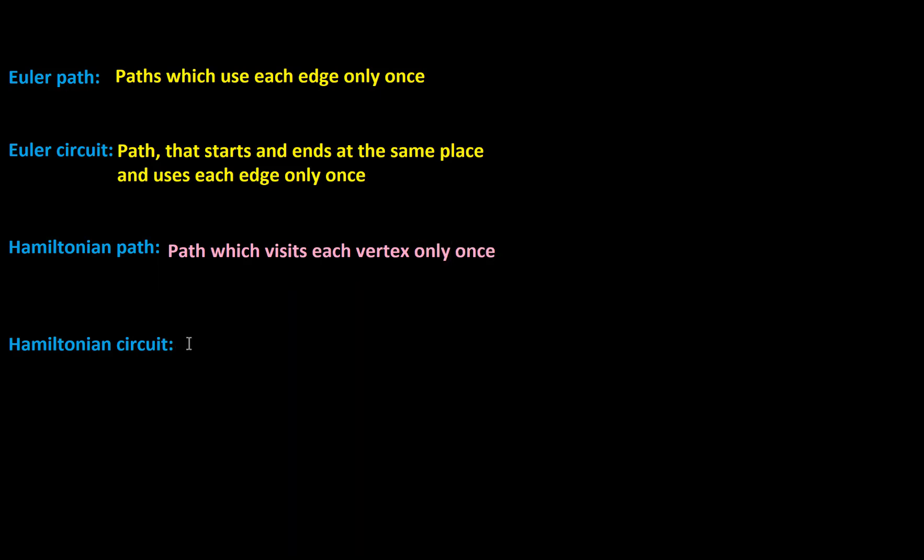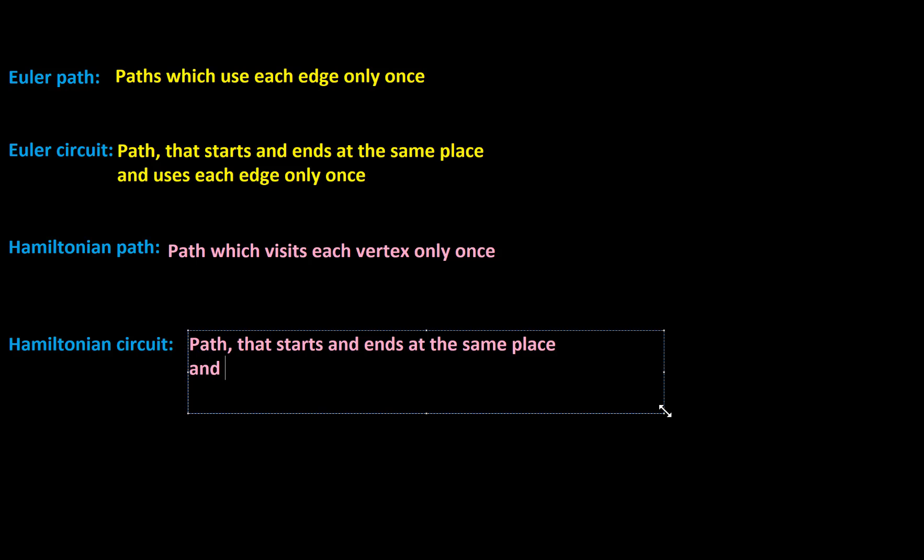And a Hamiltonian circuit would be the same idea, but we're talking about a circuit. So this would be a path that starts and ends at the same place and visits each vertex only once. That's a key distinction to make here: Euler's really interested in edges and Hamilton was really interested in vertices.